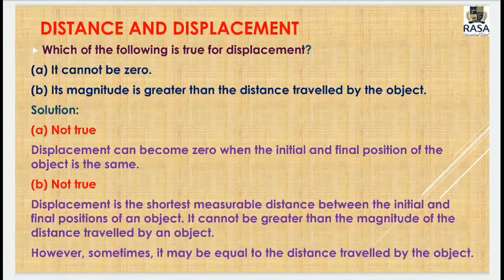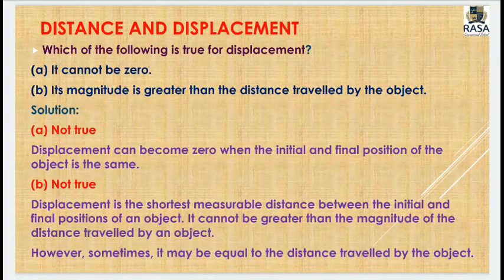Which of the following is true for displacement? Displacement cannot be zero — this is not true, because displacement can be zero when the initial and final positions of the object are the same. The magnitude of displacement can never be greater than the distance traveled by the object — it can be equal to or less than the distance traveled, or it can be zero. Displacement is the shortest measurable distance between the initial and final position of the object.